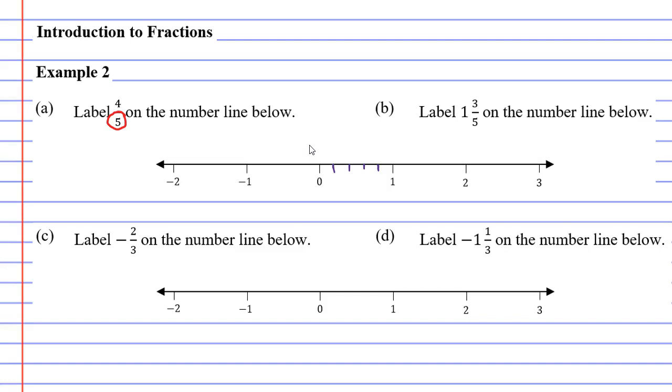So if the denominator is 5 how come I only drew four lines? Well the reason for that is because the fifth line actually lands right on the 1, so we don't need to draw the fifth line because it's already got a line there.